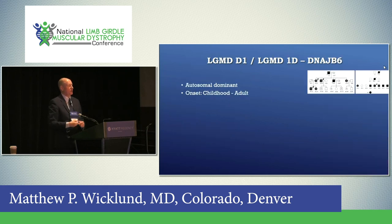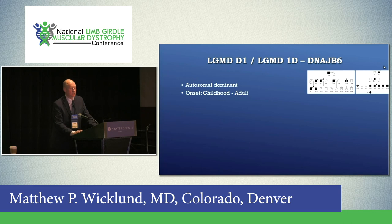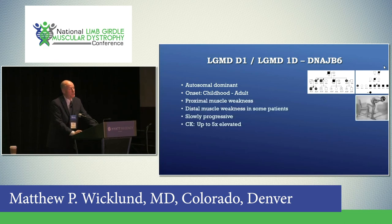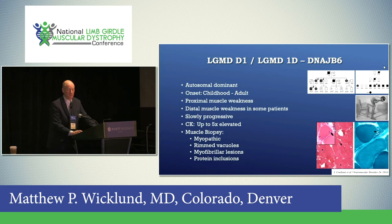Finally, one of the dominant limb girdle muscular dystrophies — LGMD1D, now D1 — due to mutations in DNAJB6. This disorder goes generation to generation to generation, as you can see in those pedigrees. There is proximal muscle weakness, with distal weakness in some patients; it's slowly progressive. On muscle biopsy there are small vacuoles visible on H&E staining and trichrome staining.